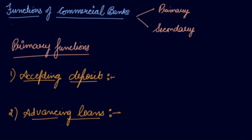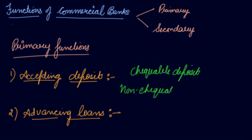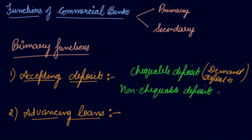Checkable deposits can be withdrawn anytime, such as demand deposits. Non-checkable deposits are those against which a cheque cannot be issued and they cannot be withdrawn anytime. You can withdraw only after the expiry of the term. These are your RDs and FDs — FD is fixed deposit, RD is recurring deposit.